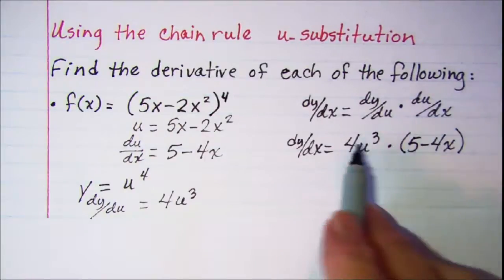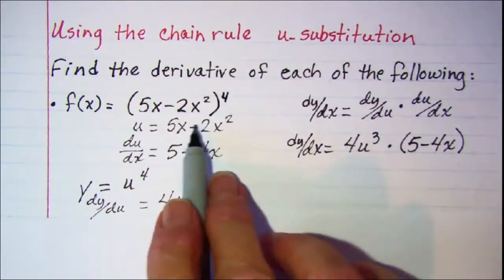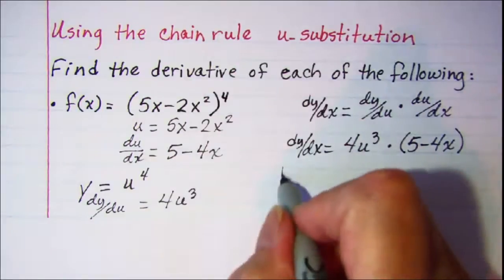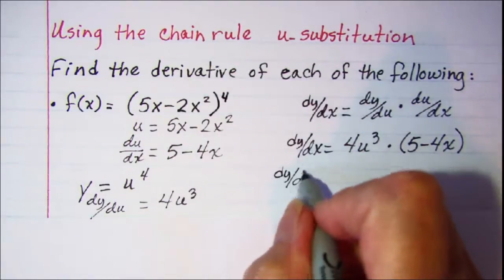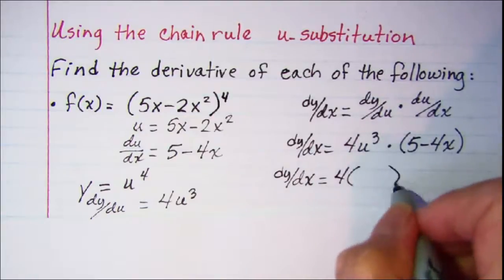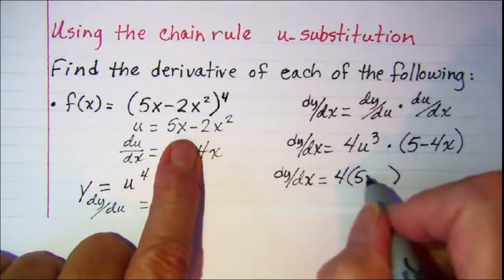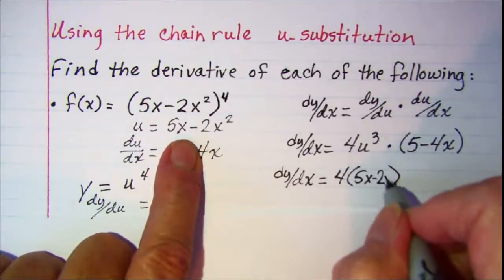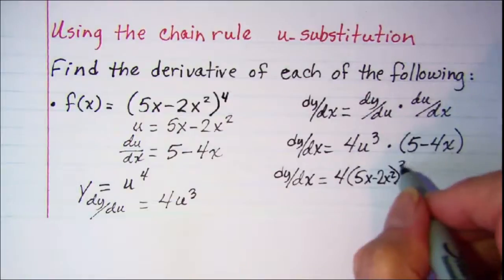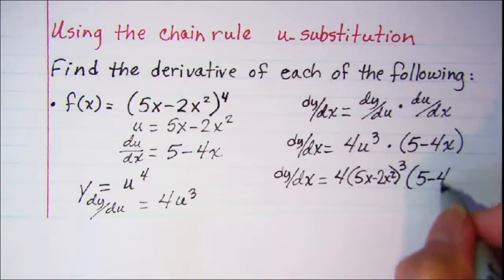Now we need to substitute back in — in place of u, we put in 5x minus 2x squared. That gives us dy/dx equal to 4 times the quantity 5x minus 2x squared, raised to the third power, times 5 minus 4x.